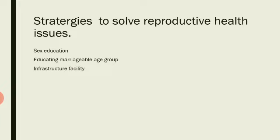The next strategy is infrastructure — building spacious hospitals with good facilities away from disturbances. These hospitals should include modern techniques and strategies to solve problems related to pregnancy, deliveries, STDs, abortions, contraception, menstrual problems, and infertility. Well-developed infrastructure can efficiently assist people in overcoming reproductive health issues.